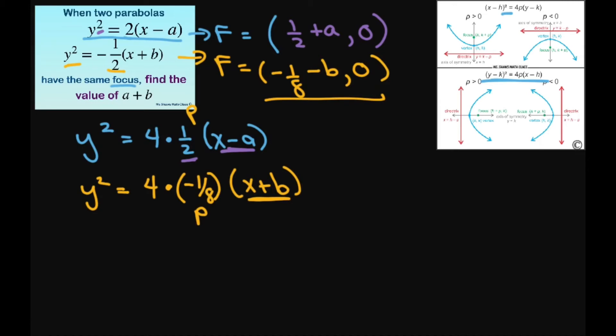So basically we can just set these two equal to each other. So we're going to have one-half plus a equals negative one-eighth minus b. So add b to both sides and you get a plus b, and then subtract one-half. So that's going to be negative one-eighth minus one-half.